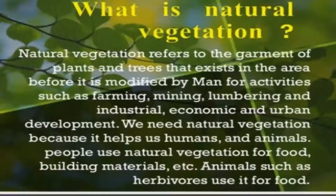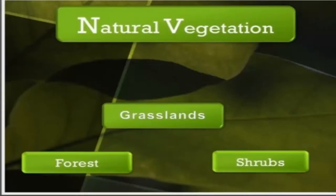Natural vegetation means the community of plants which can grow naturally on the earth without any disturbance by human beings. There is no human activity such as farming, mining, or any industrial, economic, or urban development — that is called natural vegetation, without disturbance of human beings. We are going to take information about the three categories of natural vegetation: that is forest, grassland, and shrubs. We are going to take the detailed information about the types of forest, grassland, and shrubs in this lesson.